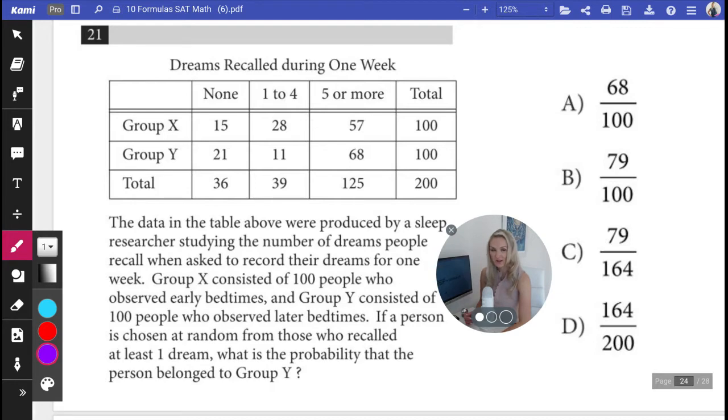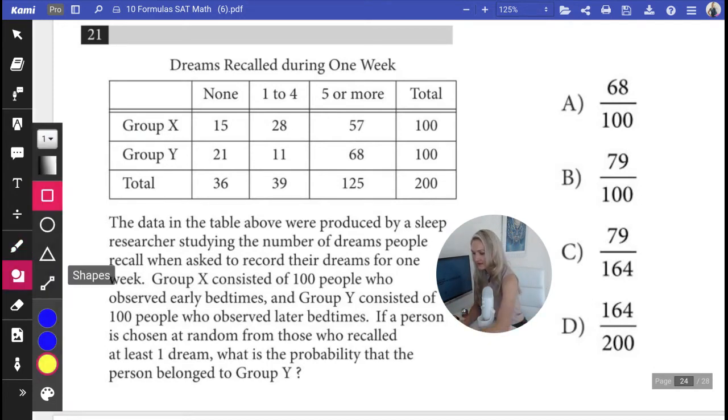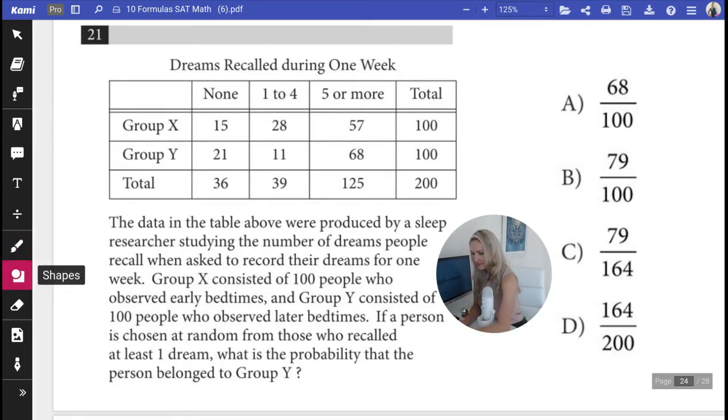All right. What do they want? They want us to find the probability of a person being chosen at random from those who recalled at least one dream. So one dream, two dreams, three dreams, four dreams, five dreams and more. So we are now looking at these two.